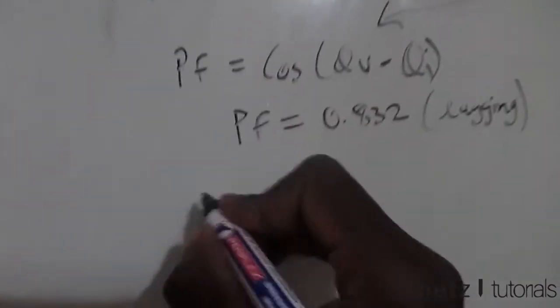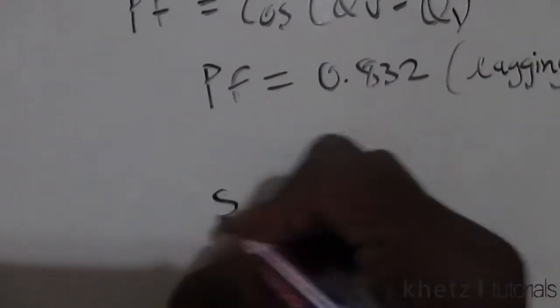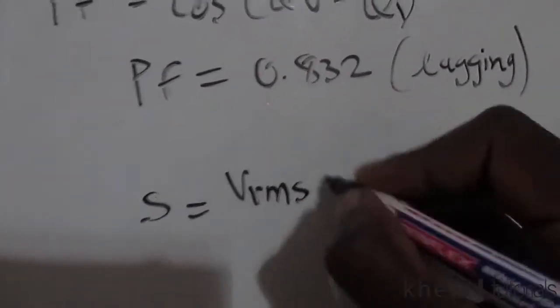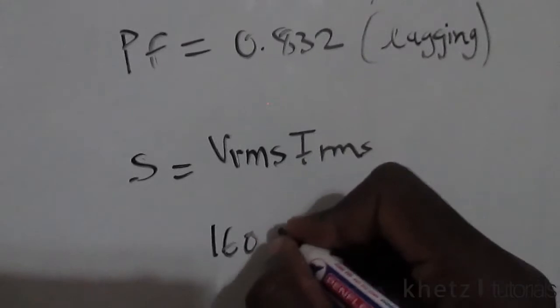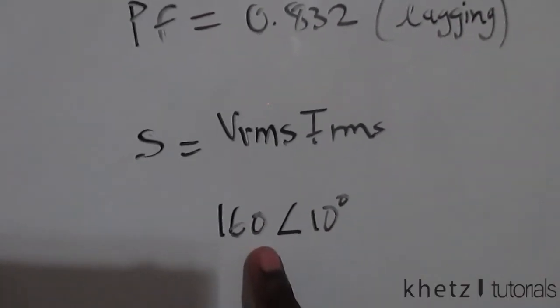Now we'll move on to the second part of the question, which is asking for the apparent power, which can be computed from VRMS multiplied by IRMS. Now here we have this value and we can transform it into polar form, but it's not an RMS value.